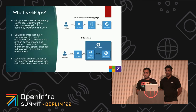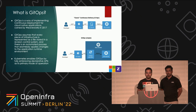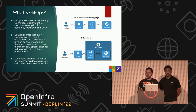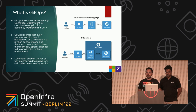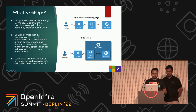So, what is GitOps? It is a way of implementing continuous deployment for cloud-native applications. It was a term coined by Weaveworks in 2017. The core idea of GitOps is having a Git repository that contains declarative descriptions of the infrastructure currently desired in the target environment, and an automated process to make the environment match the described state in the repository. Kubernetes specifically enables GitOps by fully embracing declarative APIs as its primary mode of operation.